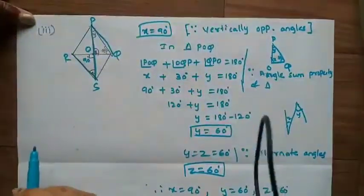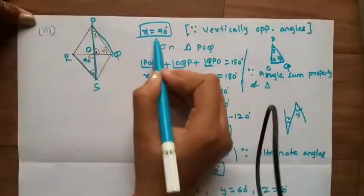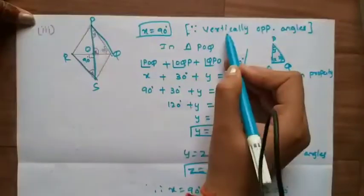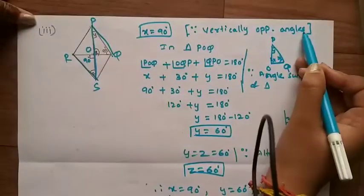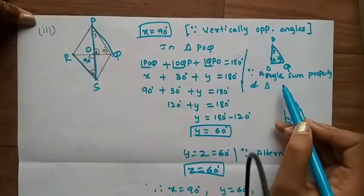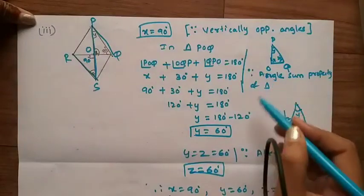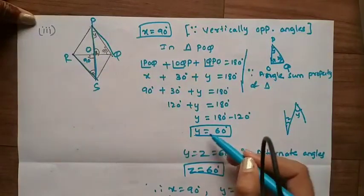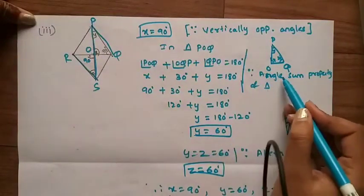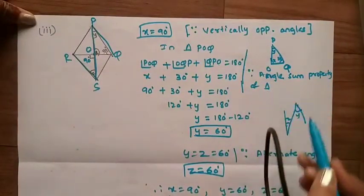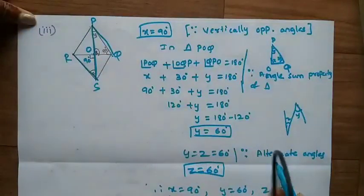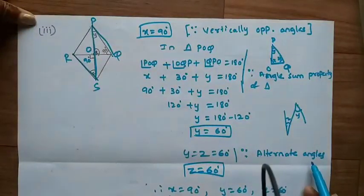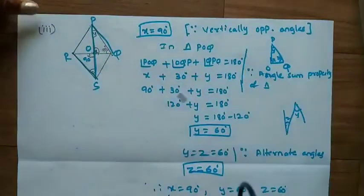In this third solution, I used three conditions: for X, vertically opposite angles; for Y, the angle sum property of a triangle; and for Z, alternate angles. This completes the solution for the third question.